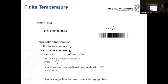Now, for the canonical ensemble at finite temperature: you're given a temperature β instead of an energy, and you want to compute the expectation value of an observable in the Gibbs state e^(−βH)/Z with precision ε. There is a heuristic algorithm for this. While you cannot prove it will always work, it overcomes what is called the sign problem in quantum Monte Carlo simulation.